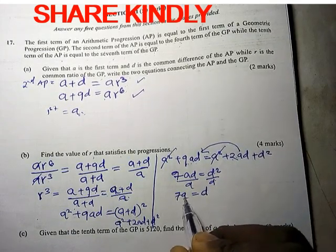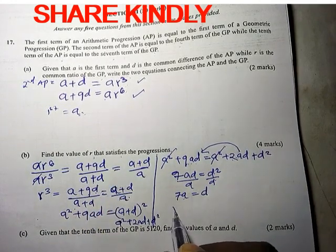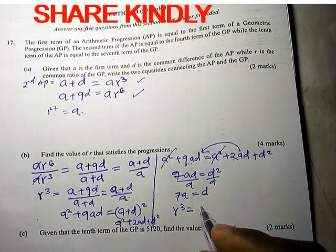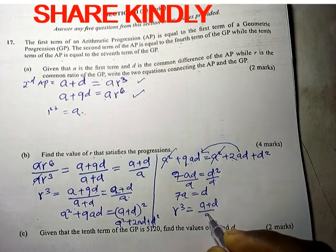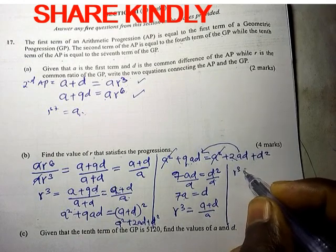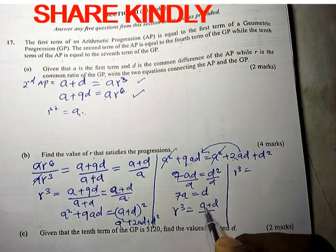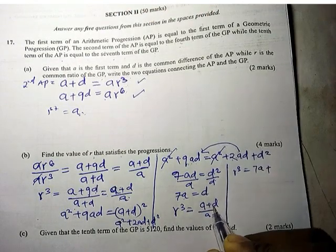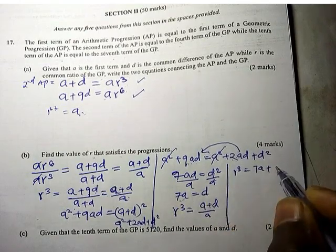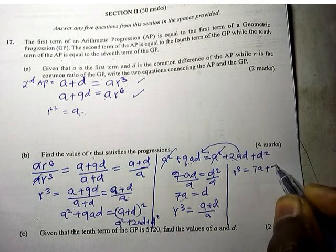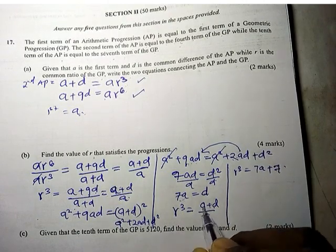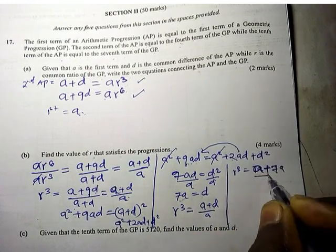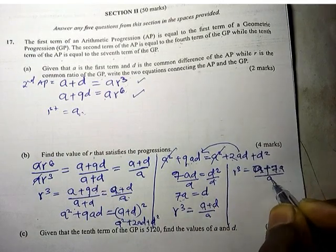Now substituting D equals 7A into R cubed equals A plus D over A. We get R cubed equals A plus 7A over A, which is 8A divided by A.